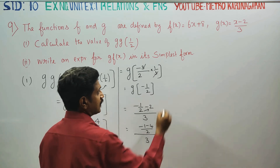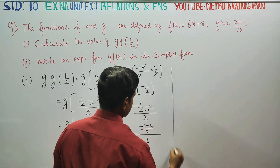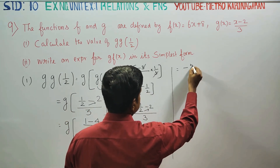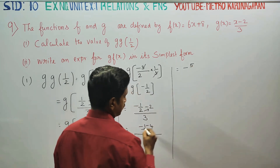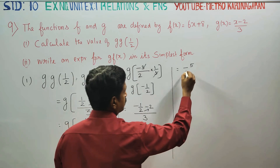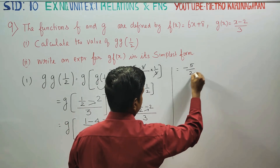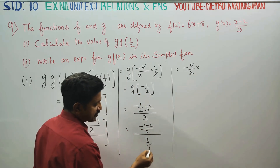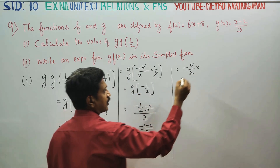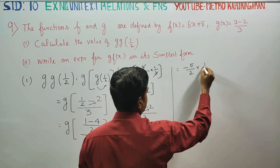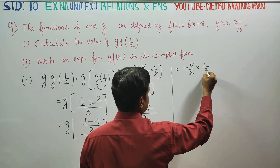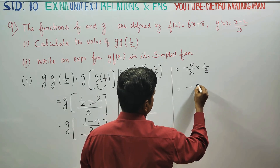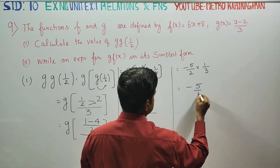4 by 2. Your answer will be minus 5 by 2. Then 3 by 1, 3 by 1, 1 by 3. Your answer will be 5 by 6.